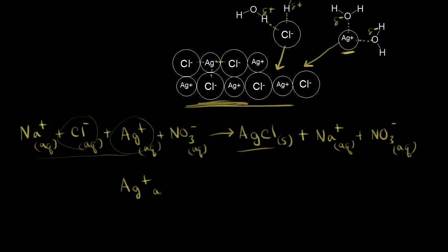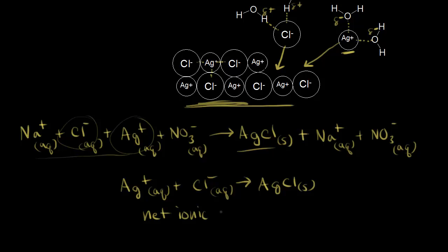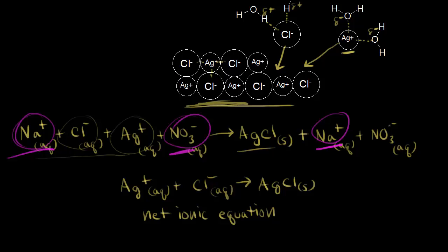The silver cation and the chloride anion are the ones coming together to form silver chloride, so we can write a net ionic equation: Ag+ (aq) + Cl- (aq) → AgCl(s). This is the net ionic equation because some ions are not taking part in the reaction — they're just observing. The sodium cation and the nitrate anion appear on both the left and right sides as ions in solution, so they are called spectator ions. They're not taking part in what's happening; they're just watching as the silver chloride precipitates out of solution. That's the idea of precipitation.